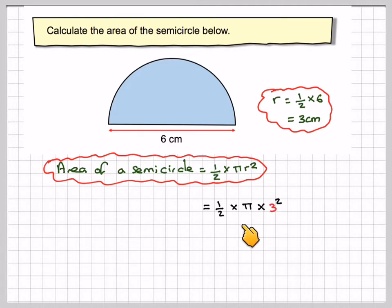So that's going to be a half times pi times the radius, which is 3 squared. 3 squared is 9, so it's going to become 9 over 2 times pi. 9 over 2 is 4.5, so it's 4.5 pi.